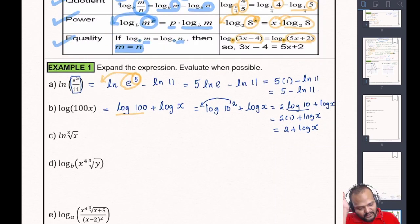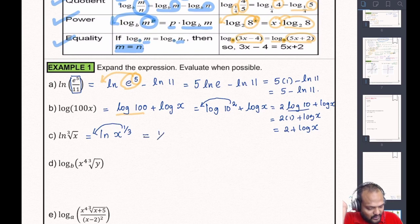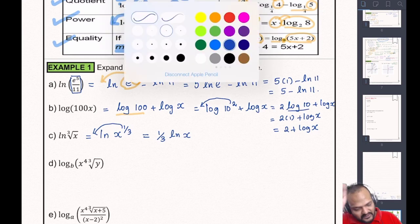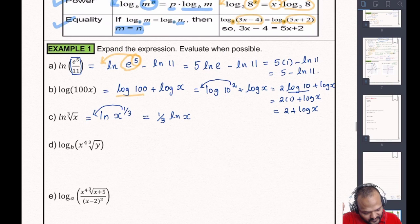For log(100x): two things are being multiplied, so this is log(100) + log(x). Now log(100) = log(10²), and bringing the power down gives 2·log(10) + log(x). Since log(10) = 1, this becomes 2·(1) + log(x) = 2 + log(x). For ln(∛x): rewrite as ln(x^(1/3)), then bring the power down: (1/3)·ln(x).